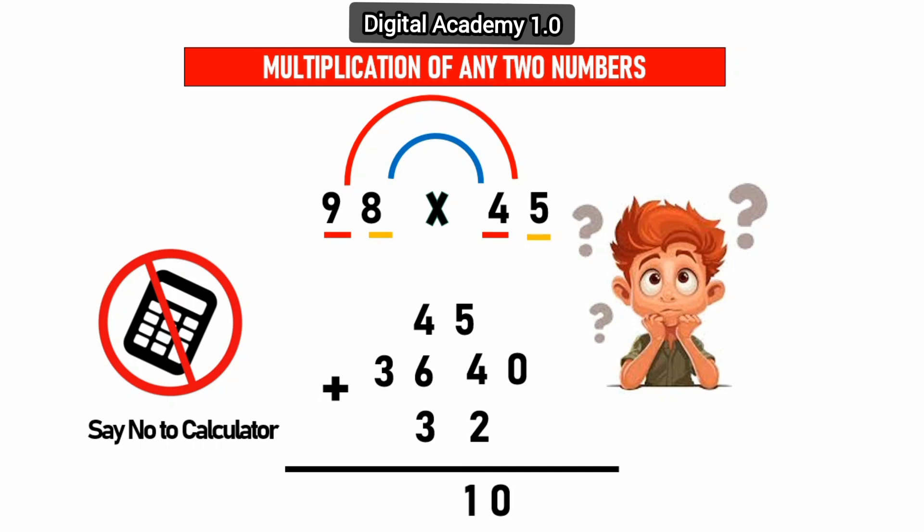Next, 1 plus 4 plus 6 plus 3 equals 14. Keep 4 and 1 carry. Also 1 plus 3 equals 4. We get 4410.